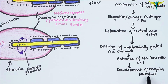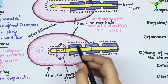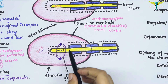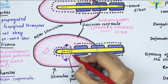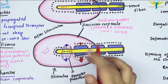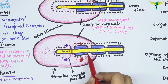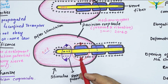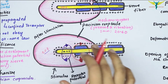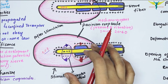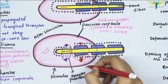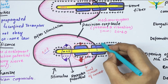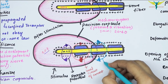After the development of the receptor potential, it causes the development of a local circuit of current flow, which spreads along the unmyelinated part of the nerve fiber within the corpuscle. When this local circuit of current reaches the first node of Ranvier within the corpuscle, it causes the opening of voltage-gated sodium channels, leading to the entrance of sodium ions into the nerve fiber, and this leads to the development of the action potential.